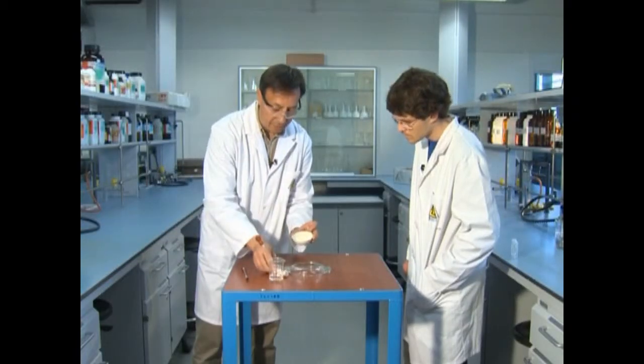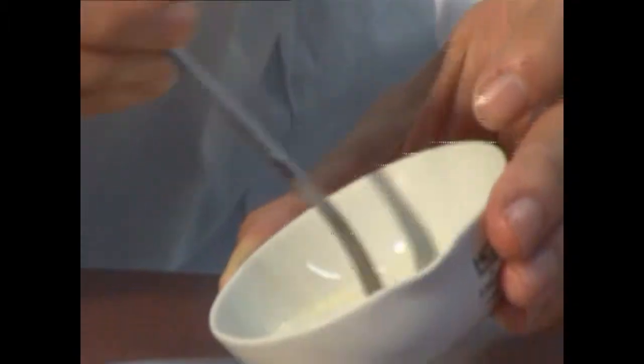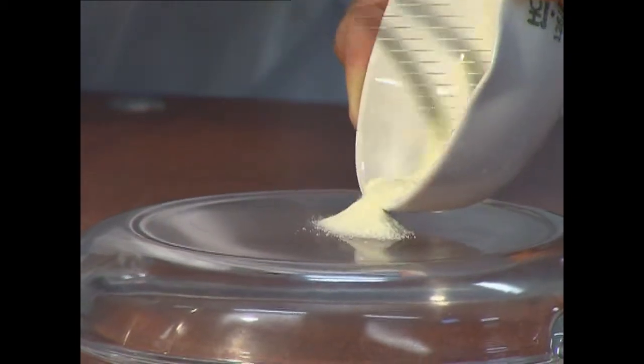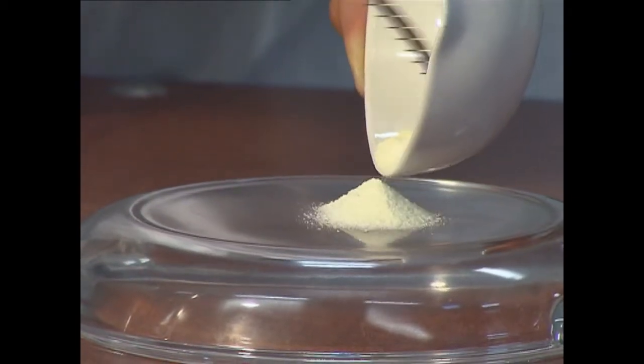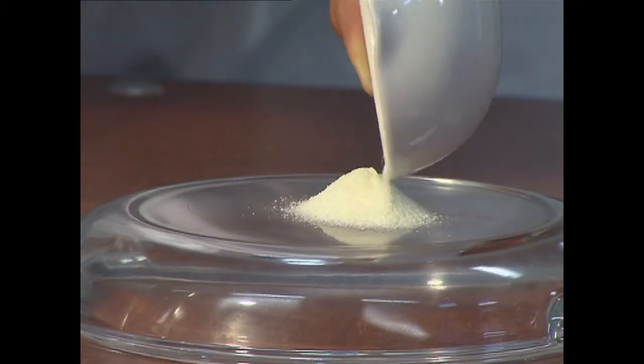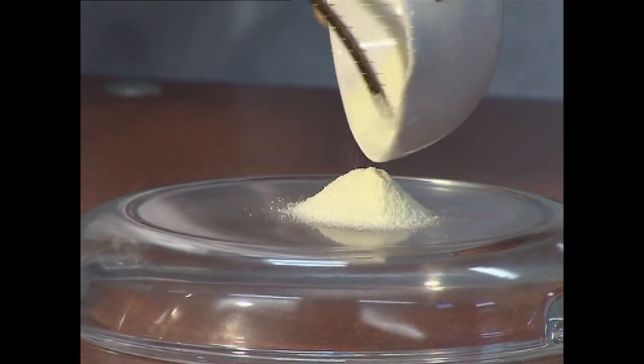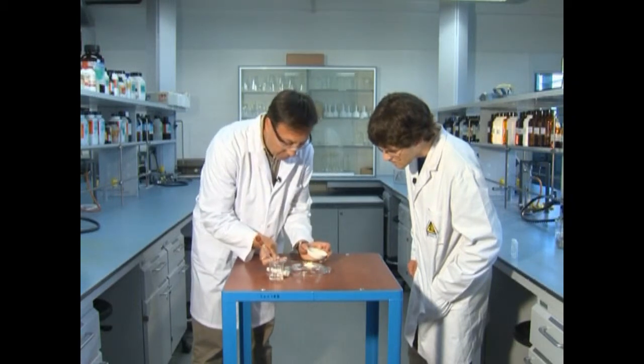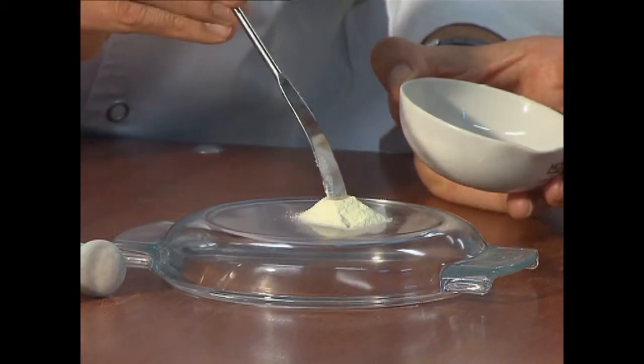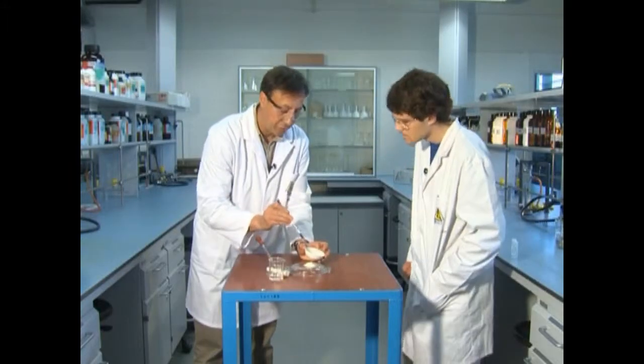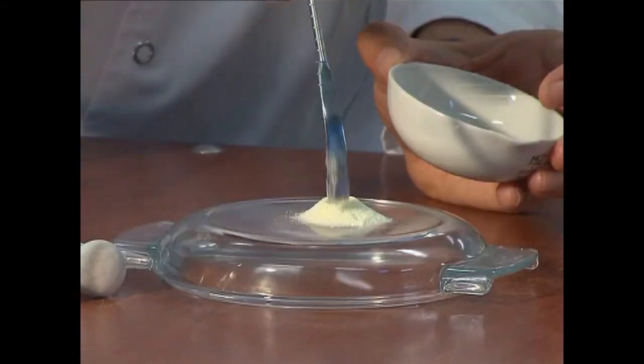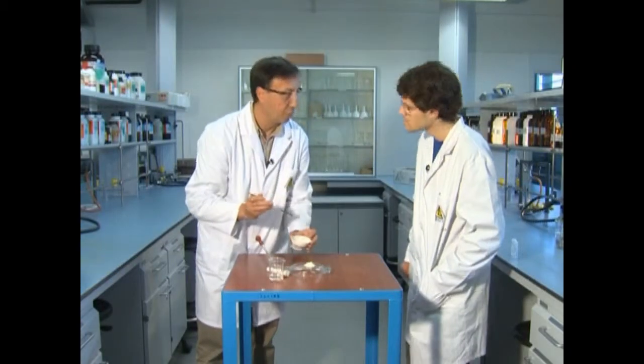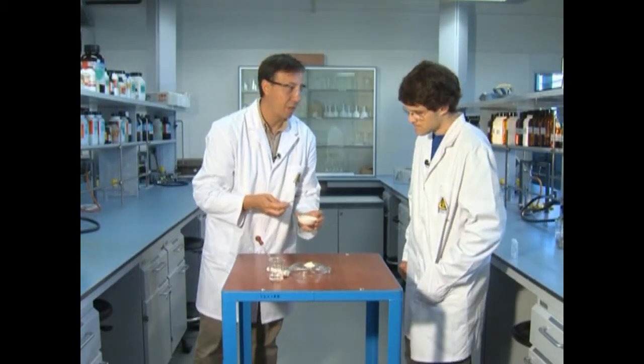I ara el que faré serà un pilonet a damunt d'aquesta placa de vidre. I ara aquí al mig hi hem d'afegir unes gotetes d'àcid sulfúric. Per això he fet aquesta forma com de volcà. Perquè aquí al mig és on posaré les gotes de sulfúric. I ara sí que fem bé de portar ulleres. I tant.